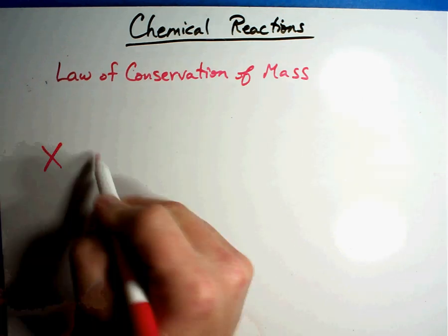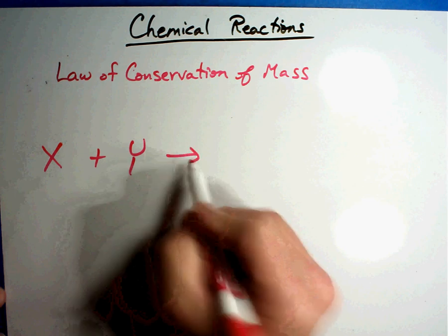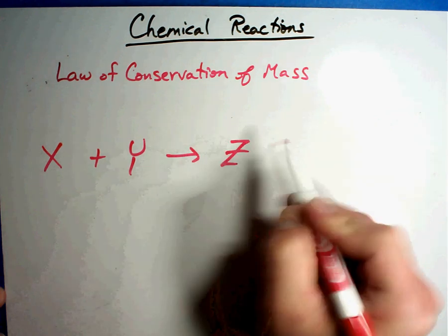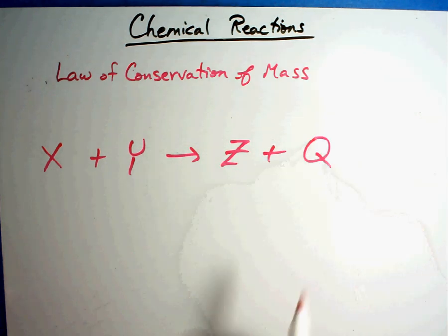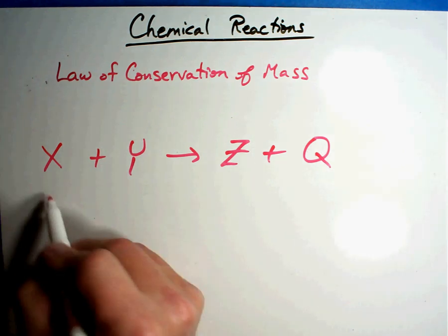If they told you that you had element X and element Y, which gives you element Z plus element Q - now none of these are real elements on the periodic table, but it works exactly the same way. They told you 7 grams and 9 grams, and that this one was 4 grams, and they wanted to know the answer.